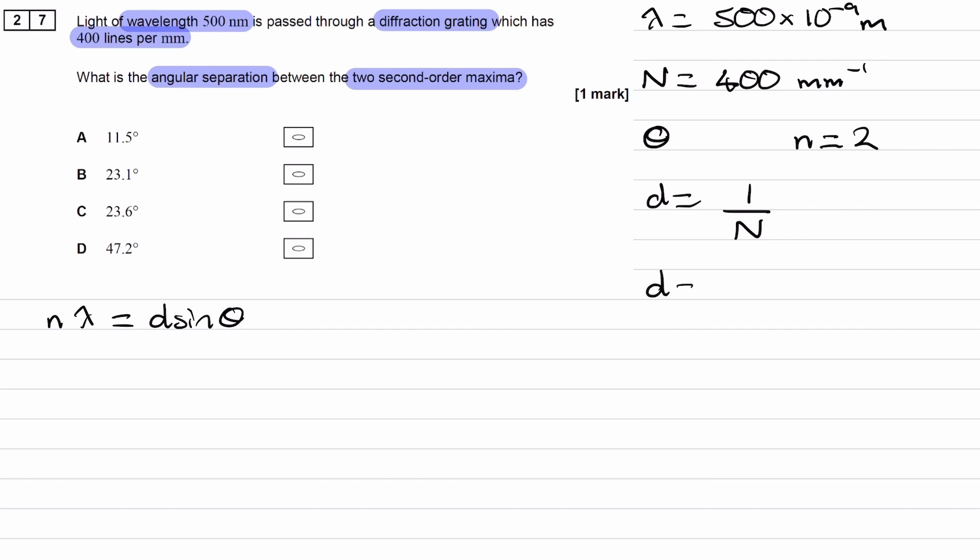If we do 1 over 400 lines per millimeter, this gives us 2.5 times 10 to the minus 3 millimeters. This is the distance between adjacent slits in millimeters.